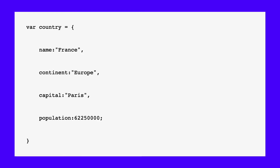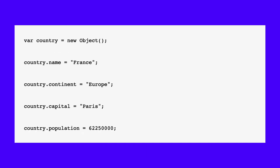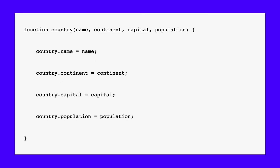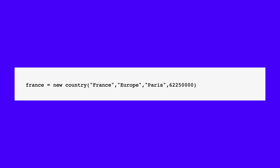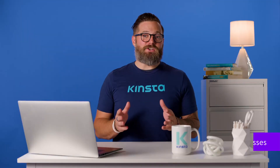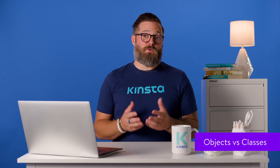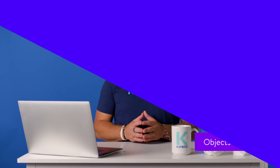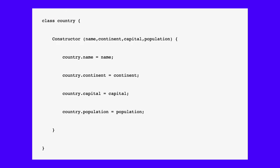First, you can use the object literal or object initializer approach. You can also instantiate an object and then assign its properties. Note that you refer to the properties of an object using the syntax object.property. Finally, you can create objects using constructor functions. Object properties can be variables or functions. When an object property is a function, it's called a method. In a nutshell, a class is a generic structure template for an object. Classes use the constructor form to describe objects, and just as with objects, classes may have methods.